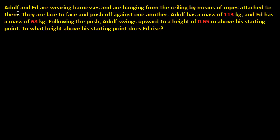Alright, so it says: Adolf and Ed are wearing harnesses and are hanging from the ceiling by means of ropes attached to them. They are face to face and push up against one another. Adolf has a mass of 113 kilograms and Ed has a mass of 68 kilograms. Following the push, Adolf swings upward to a height of 0.65 meters above his starting point. To what height above his starting point does Ed rise?